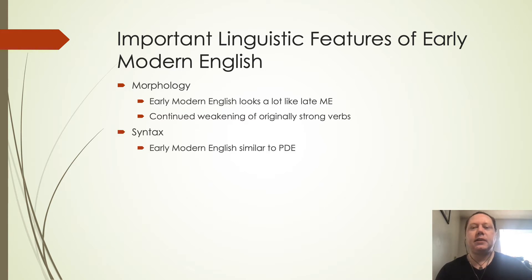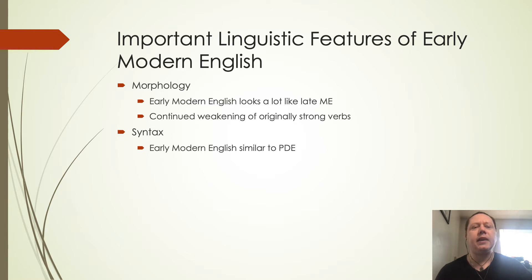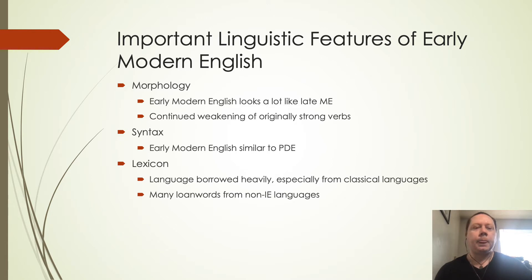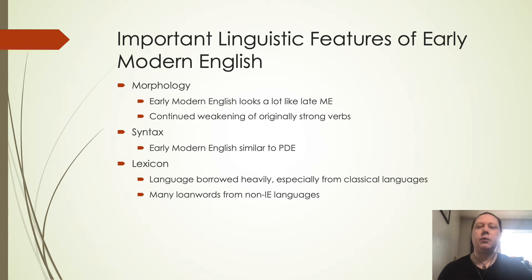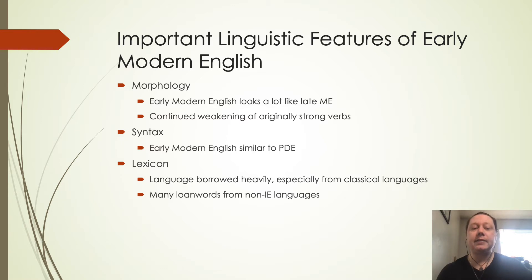With syntax, Early Modern English is pretty much very similar to present-day English. There's not that many differences — there's a little bit more flexibility than what we have today, but it's already gotten much more stable and rigid by this period. With lexicon we're starting to borrow a lot of words again. During Middle English a lot of words were borrowed from French and some from Latin. We're going to be borrowing even more from Latin and Greek as technology and medicine increase.